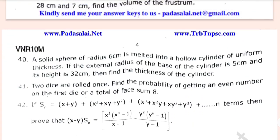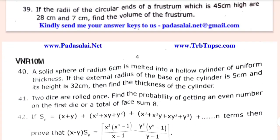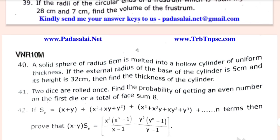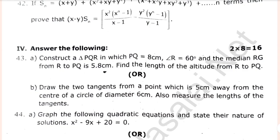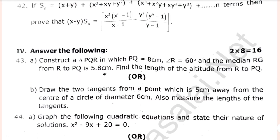If x plus y plus x squared plus xy plus y squared plus x cubed plus x squared y plus xy squared plus y cubed plus n terms, then prove that s minus y is equal to something. That is the compulsory question.